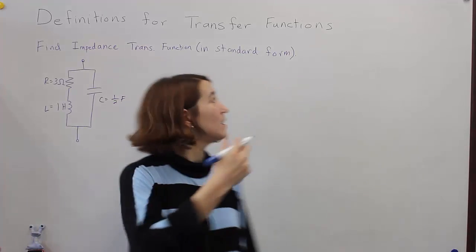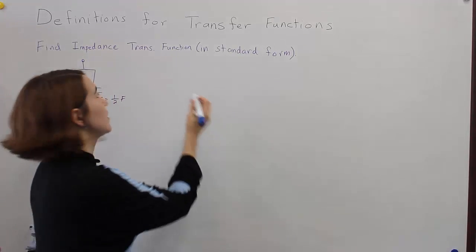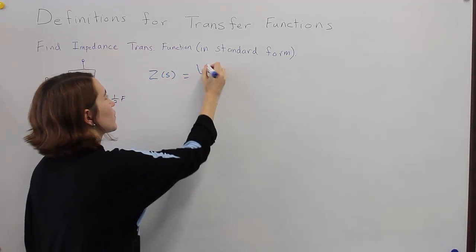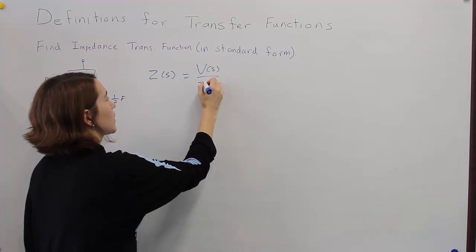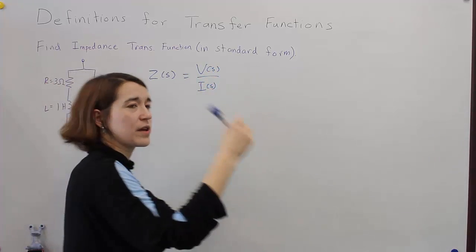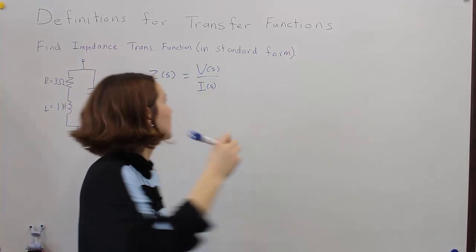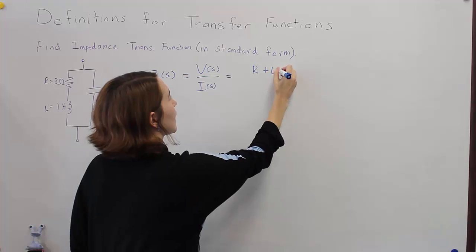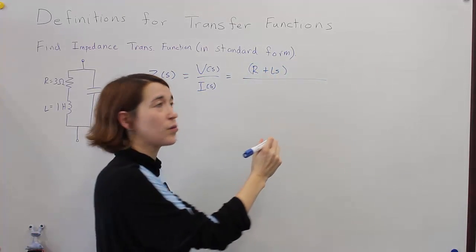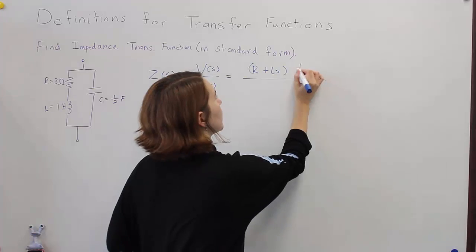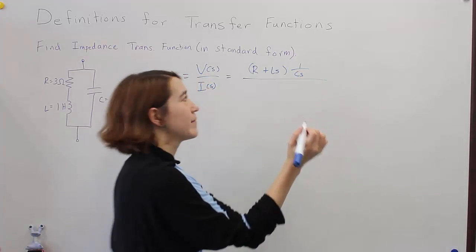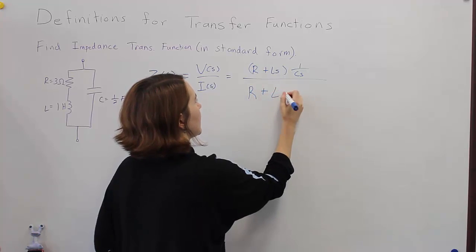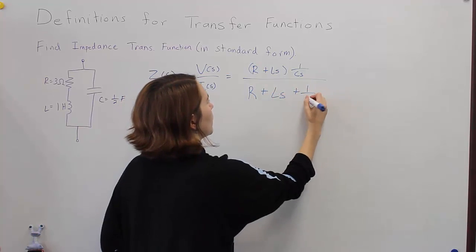Let's start by writing the transfer function. We'll call it Z of S because we're looking at impedance, which is voltage over current. We can look at the circuit and see these two elements are in series, so we'll write R plus Ls in the numerator, times one over Cs. Then we add the two together in the denominator: R plus Ls plus one over Cs.